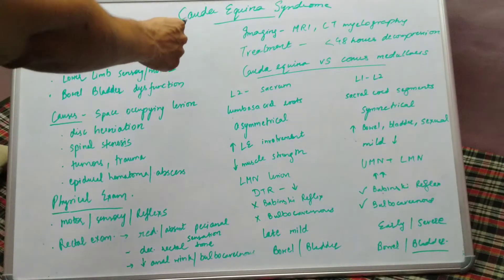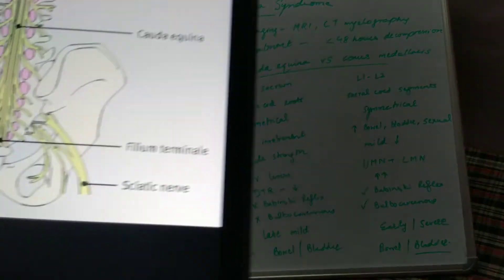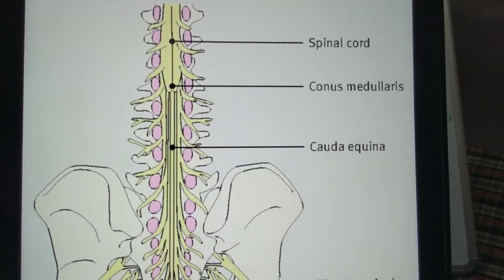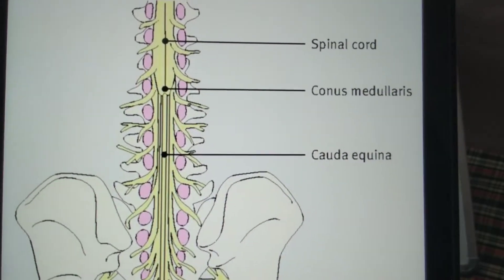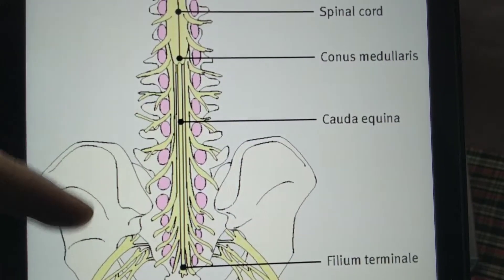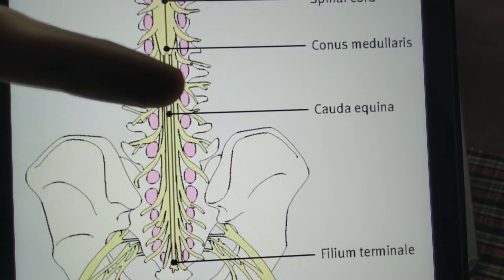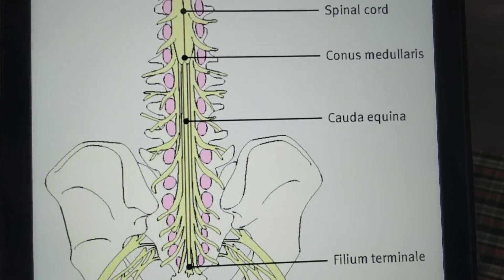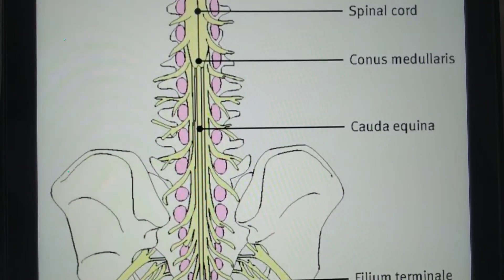Today our topic of discussion is cauda equina syndrome. To begin with, we should know the normal anatomy — what constitutes the cauda equina and the other associated structures. This is the distal part of the spinal cord. The spinal cord ends at the level of L1-L2 vertebra, but the nerve roots from L1 to S5 travel down to exit from the corresponding vertebra. This bunch of nerve root fibers forms the cauda equina — the name came from its shape, resembling a horse's tail.